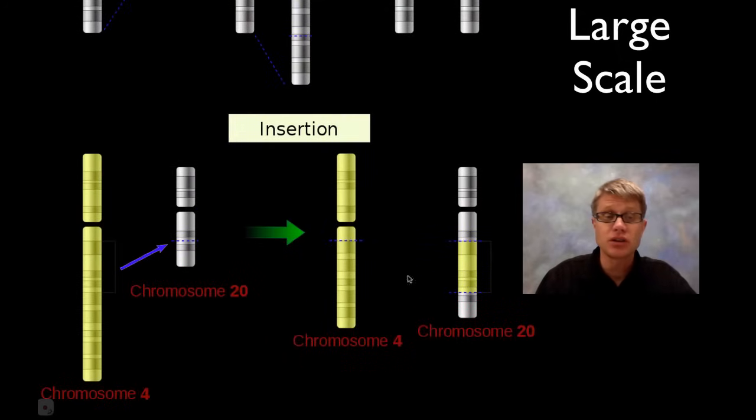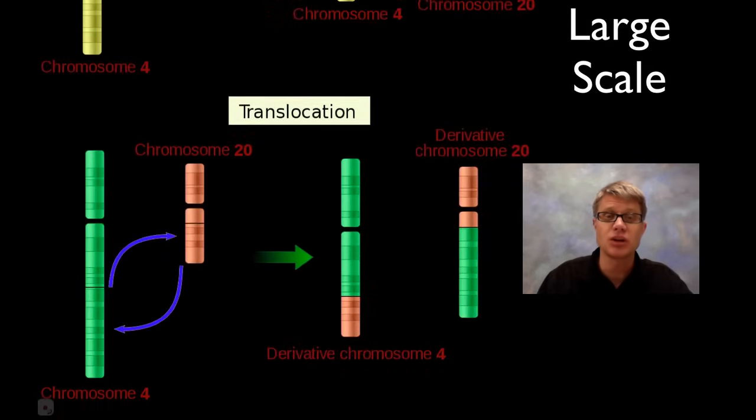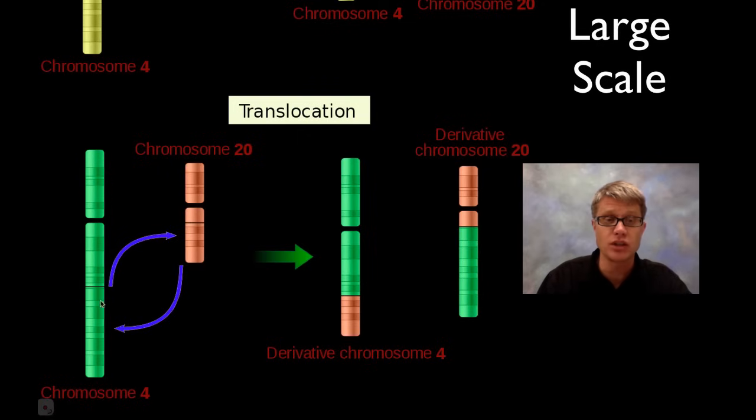We could also have an insertion where we're taking one chromosome and actually inserting that into another chromosome. That might seem crazy, like we could never exist past that. But if you think about it, these genes have chromosomes, so it doesn't mean that individual is necessarily going to die. This could be during mitosis, so it wouldn't be a very big deal at all, or it could occur during meiosis but we'd still have these genes that we need. And then we could also have a translocation where we're taking one chunk of this one over to here and this one back again.